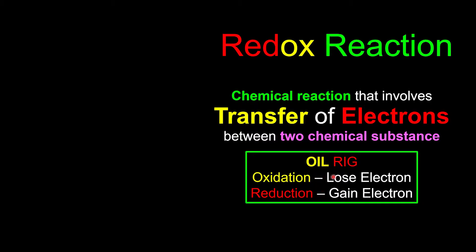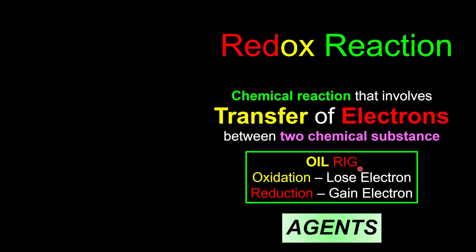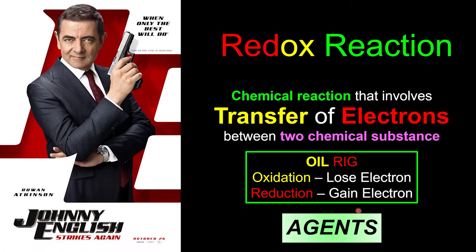This is why we learn it through OIL RIG. And these things wouldn't happen without any professionals. This professional is what we call agents. Like us — if you want to buy insurance, you look for insurance agents. If you want to buy property, you look for property agents. And now we're going to look at what are the secret agents in our chemistry.